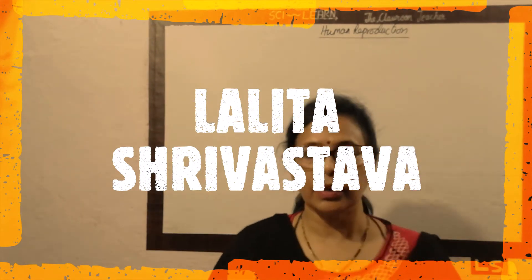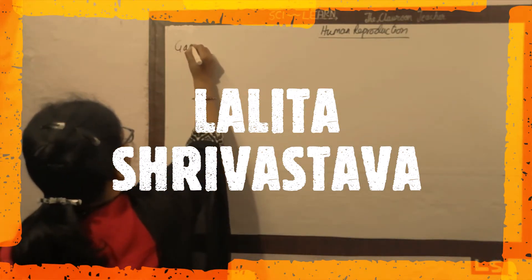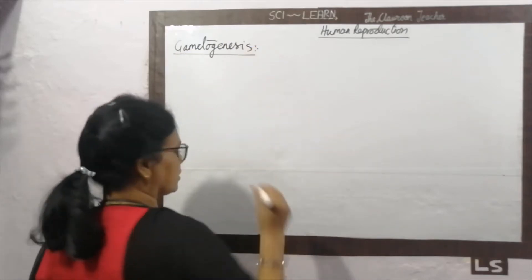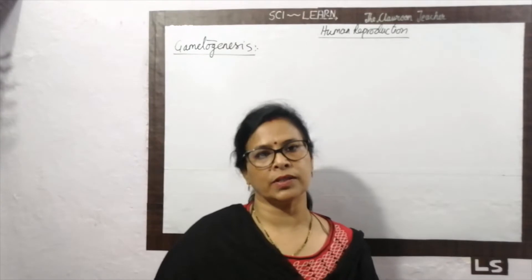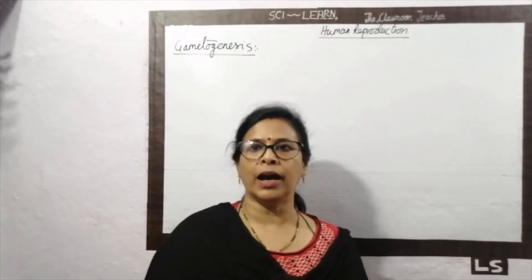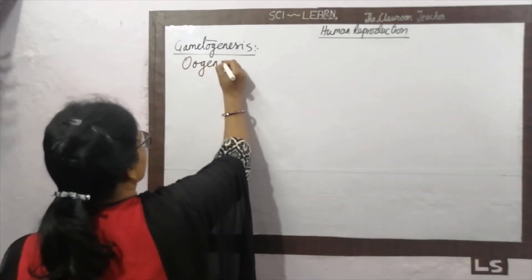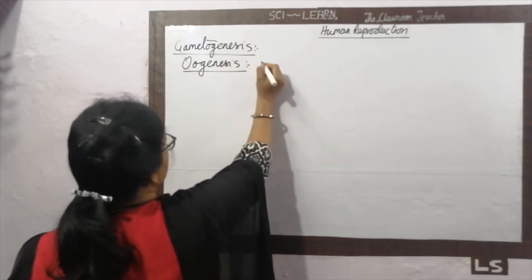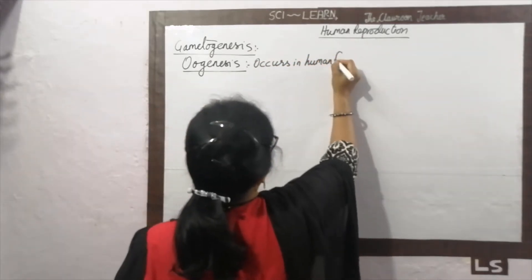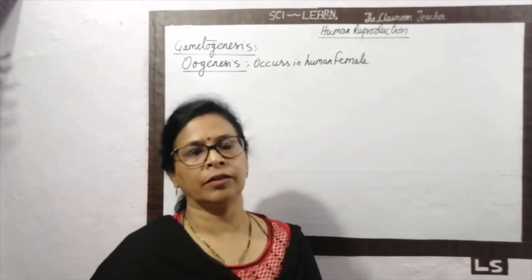In Class 12, the next topic in human reproduction is gametogenesis — the formation of gametes, both male and female gametes. Today we are going to start with oogenesis, which occurs in the human female and is the process of formation of the ovum.